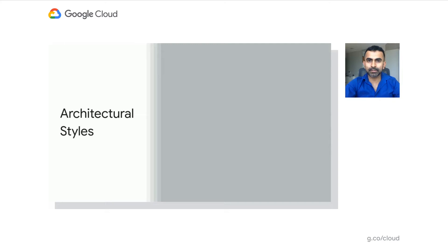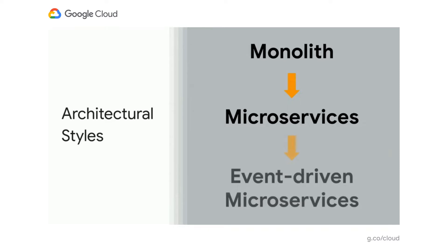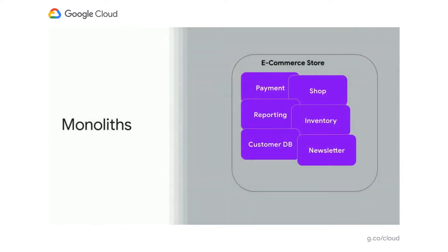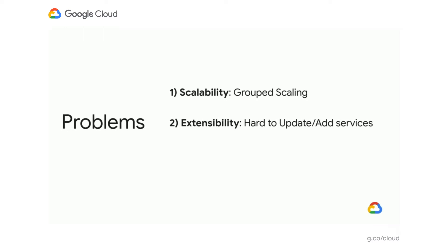There are several architectural styles in software — monoliths, for instance. Perhaps your organization has monoliths. We're going to take you on a journey today from monoliths to microservices to event-driven microservices. Monoliths are fairly easy to understand. Here's an e-commerce store with six component services. There are a few problems inherent in any monolith: scalability — component services scale as a group and not individually; extensibility — it's hard to add or update services; and coupling — there are often coupled dependencies between services.